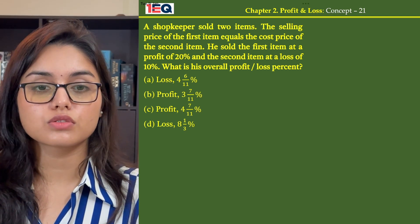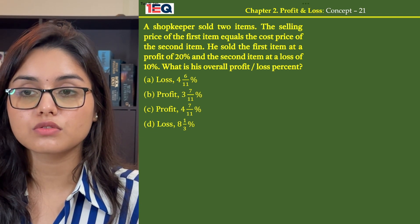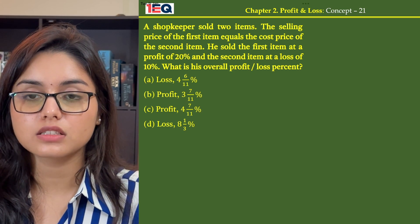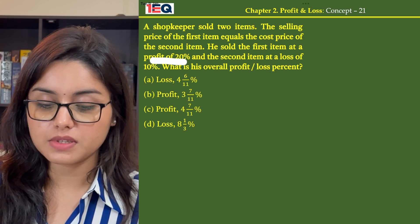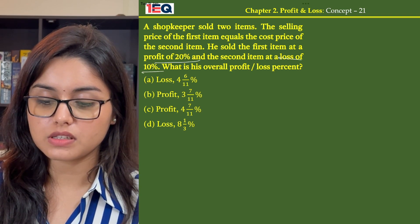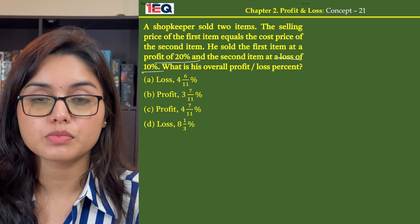A shopkeeper sold 2 items. The selling price of the first item equals the cost price of the second item. He sold the first item at a profit of 20% and then sold the second item at a loss of 10%. What is his overall profit or loss percent?